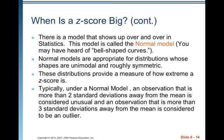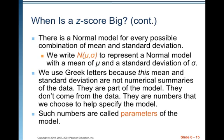There is a model that shows up over and over again in statistics called the normal model — you may have heard it called the bell-shaped curve. Normal models are appropriate for distributions whose shapes are unimodal and roughly symmetric. These distributions provide a measure of how extreme a z-score is. Typically, under a normal model, an observation more than two standard deviations from the mean is considered unusual, and one more than three standard deviations away is considered an outlier — and we'll see in just a minute why that's true based on some percentages.